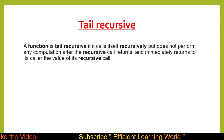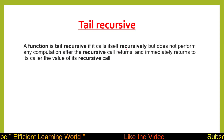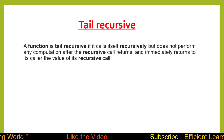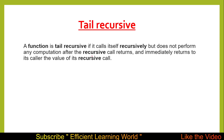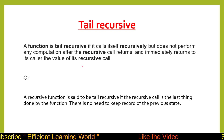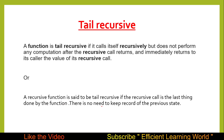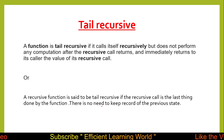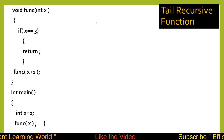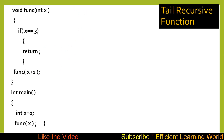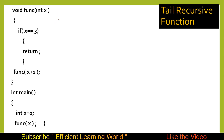Now let's discuss tail recursion, the third type. A function is tail recursive if it calls itself recursively but does not perform any computation after the recursive call returns, and immediately returns the value of its recursive call to its caller. A simpler definition: a recursive function is said to be tail recursive if the recursive call is the last thing done by the function — there is no need to keep a record of the previous state.